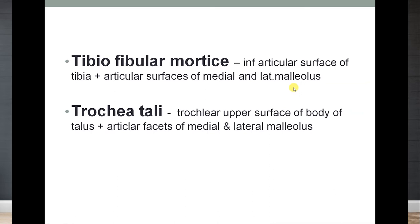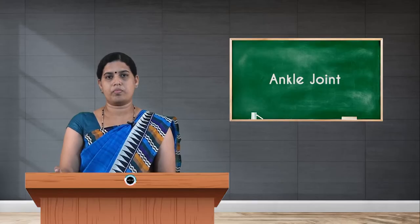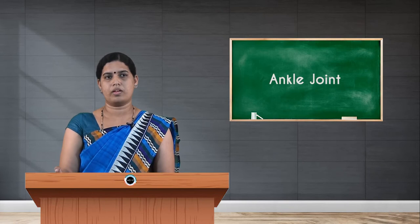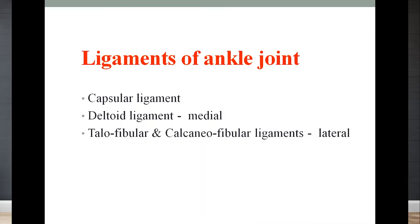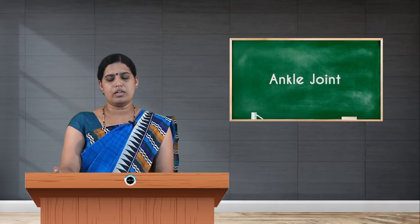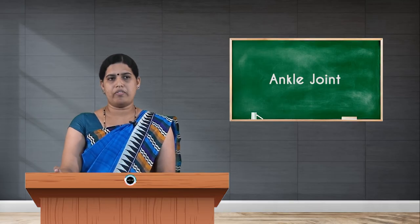Coming to the ligaments of the ankle joint, there are three: the fibrous capsule or capsular ligament, as applies to all joints; the medial ligament, also called the deltoid ligament; and the lateral ligaments. We will see each one by one.